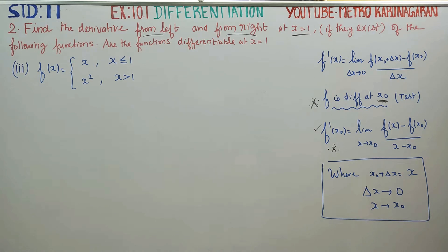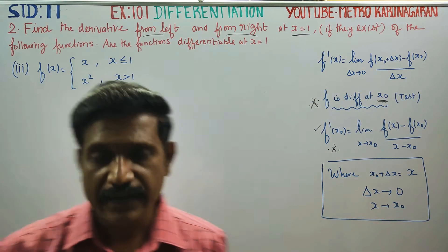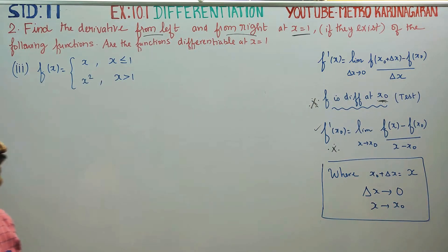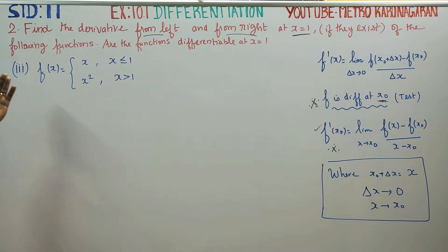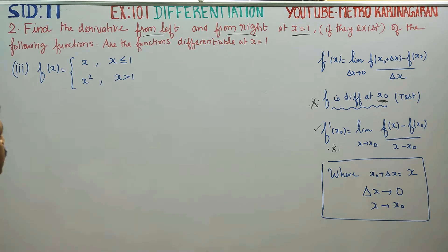Dear 11th standard students, in exercise number 10.1, sum number 2, find the derivative from the left and from the right at x is equal to 1, if they exist, for the following functions — or is the function differentiable at x is equal to 1?